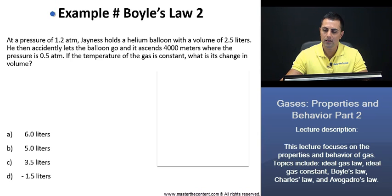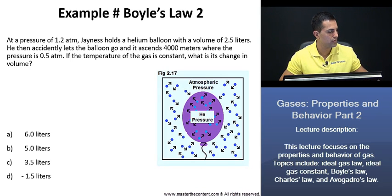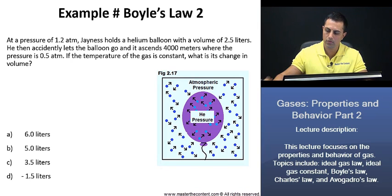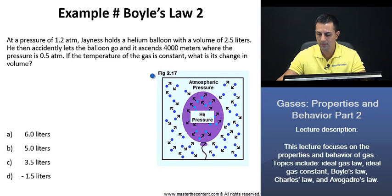Looking here at example Boyle's Law 2. At a pressure of 1.2 atmospheres, Janus holds a helium balloon with a volume of 2.5 liters. He then accidentally lets the balloon go and it ascends 4,000 meters, where the pressure is 0.5 atmospheres. If the temperature of the gas is constant, what is its change in volume? Let's consider this problem for just a moment, looking here at figure 2.17.